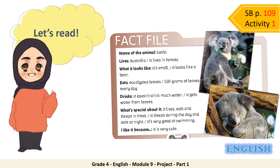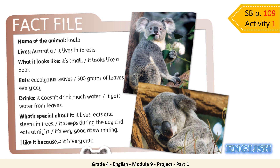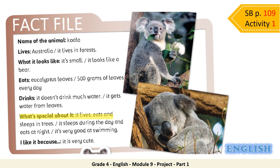Now it's time to read the fact file together. Now read with me. Fact file: Name of the animal — Koala. Lives — Australia, it lives in forests. What it looks like — it's small, it looks like a bear. Eats — eucalyptus leaves, 500 grams of leaves every day. Drinks — it doesn't drink much water, it gets water from leaves. What's special about it — it lives, eats, and sleeps in trees; it sleeps during the day and eats at night; it's very good at swimming.